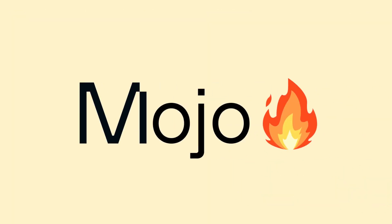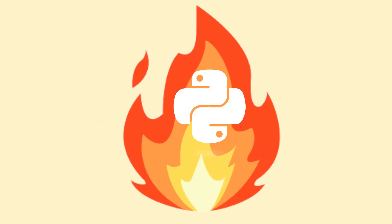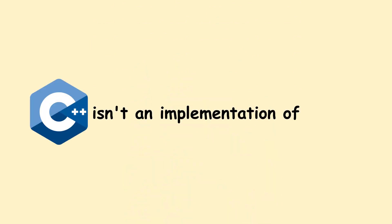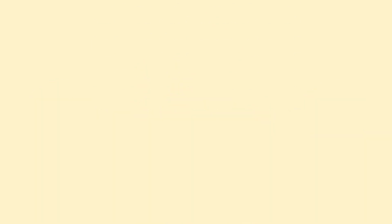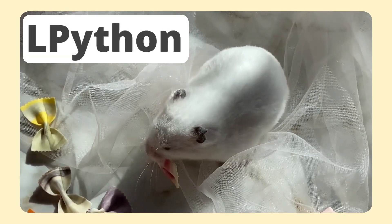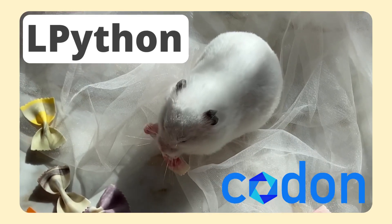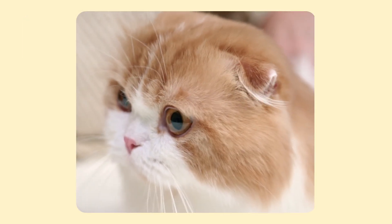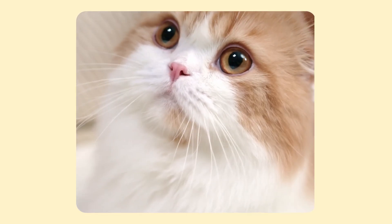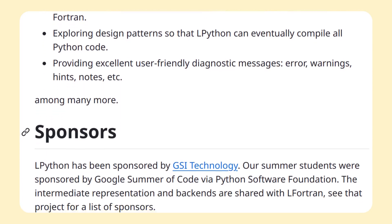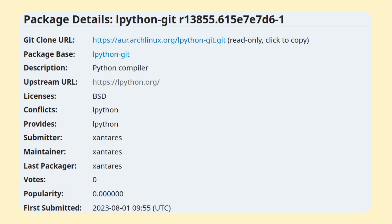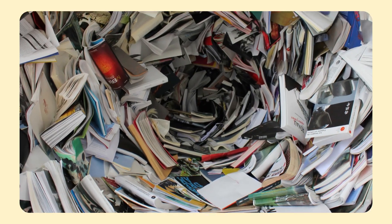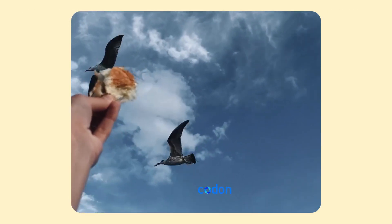First off, let's get Mojo out of the way. Even though Mojo strives to be a Python superset, I don't consider it to be an implementation of Python. C++ isn't an implementation of C, so let's cross Mojo off the list. Two implementations I find the most interesting are LPython and Codon. Both try to achieve roughly the same goals — producing binaries and using type hints for actual optimizations, which I don't think CPython is doing. One selling point of LPython is also JIT support, but if the JIT in CPython ever gets out of the experimental phase, I'm not sure why anyone would pick LPython over CPython in that aspect. LPython is still in alpha stage, and to install it you need to compile it from source. I got lucky with AUR, but the package didn't compile, and when I tried compiling it myself I ran into some other issues, so I gave up on it and moved on to Codon.